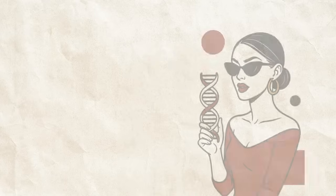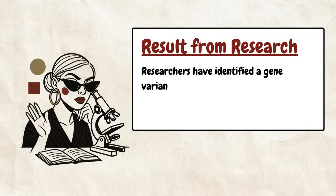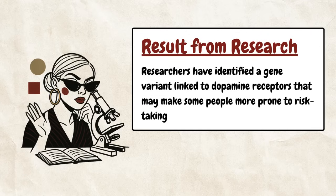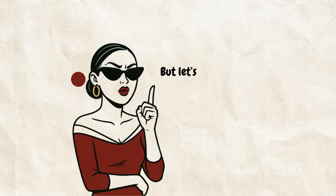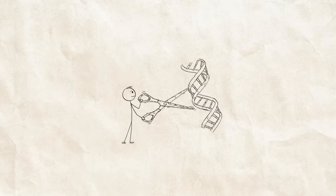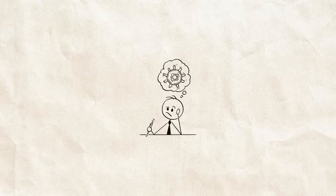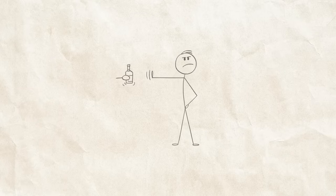Know what's wild? There's actually a genetic component to cheating. Researchers have identified a gene variant linked to dopamine receptors that may make some people more prone to risk-taking behaviors, including infidelity. So some people might literally have cheating in their DNA. But let's be clear, having the gene doesn't mean you're destined to cheat. It just means you might need to work harder on impulse control. It's like having a genetic predisposition to alcoholism. You can still choose not to drink.